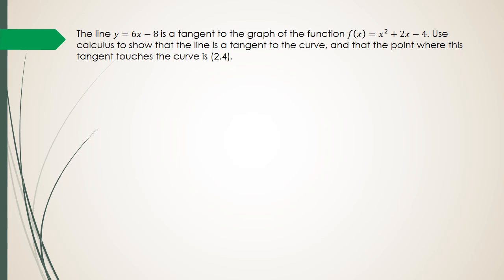Okay, so what we've got here is a parabola. It's a positive parabola. It looks like this. And then we've also got a straight line that is a tangent and it has a gradient of 6 for this tangent.